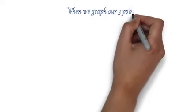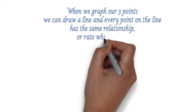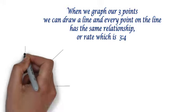When we graph our three points, we can draw a line, and every point on the line has the same relationship or rate, and that rate is always three to four.